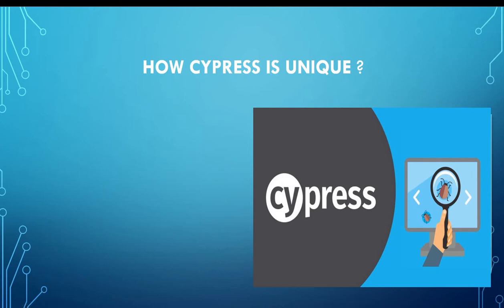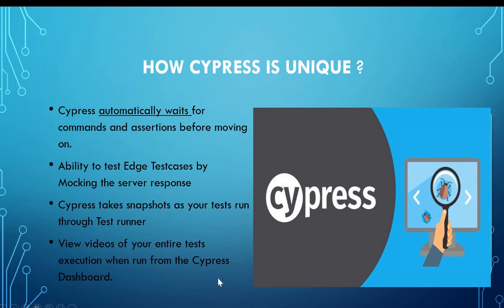Next is how Cypress is unique compared to other automation tools. Here are some key points. Cypress automatically waits for a command and assertion before moving on. In other tools like Selenium, if you want to apply implicit or explicit wait, you have to write the code to do it. But with Cypress, wait commands are inbuilt — behind the scenes, the Cypress engine will wait for the command and follow the order. And on top of that, if you still want to add more manual wait, you can do it.